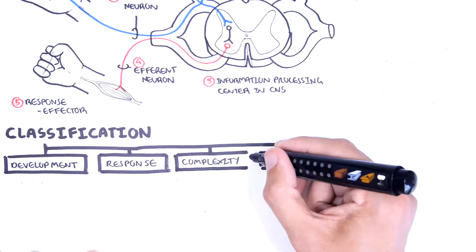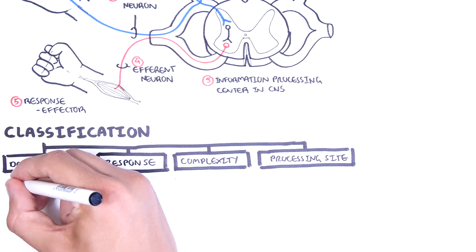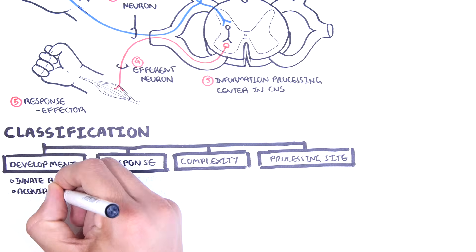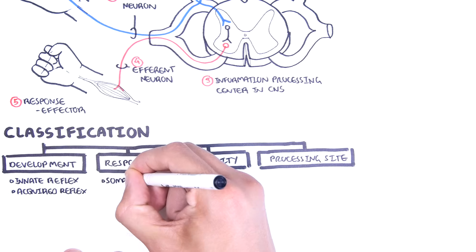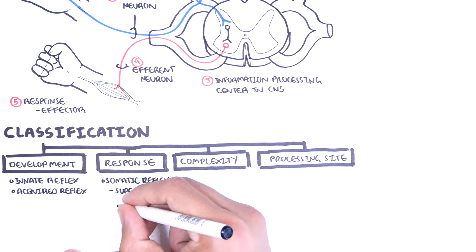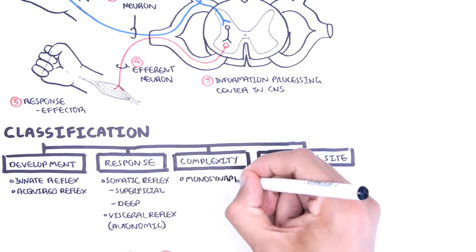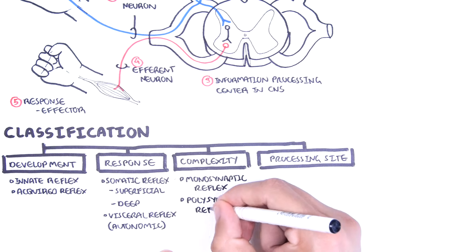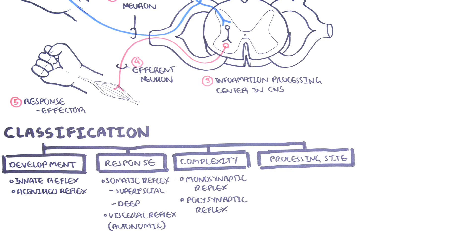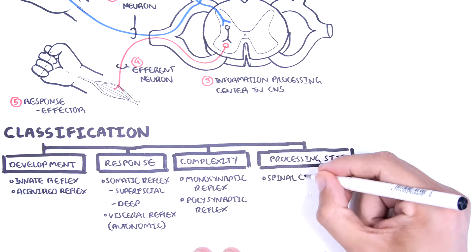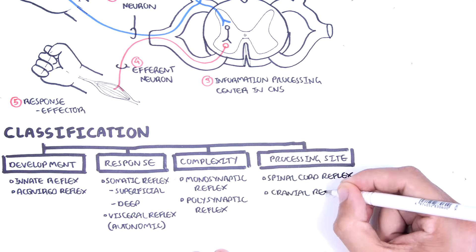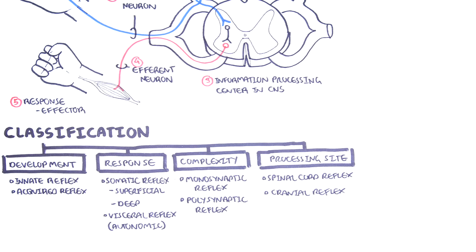Development includes whether the reflex is innate or acquired. The reflex response is the nature of the resulting motor response, whether it is somatic or visceral. Complexity means the complexity of the neural circuit involved, whether it is a monosynaptic reflex or a polysynaptic reflex. And finally, the processing side, where the information is being processed, whether it is the spinal cord or the brain, both of which make up the central nervous system.